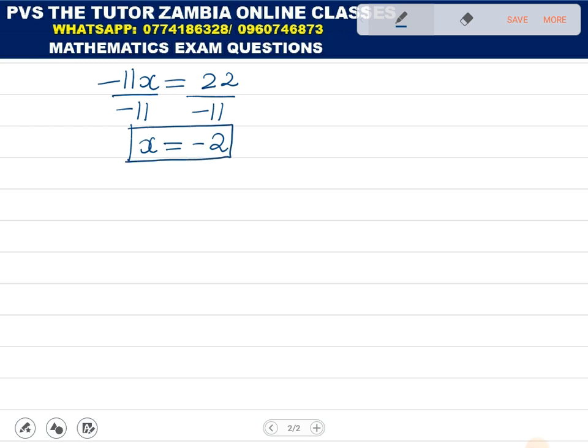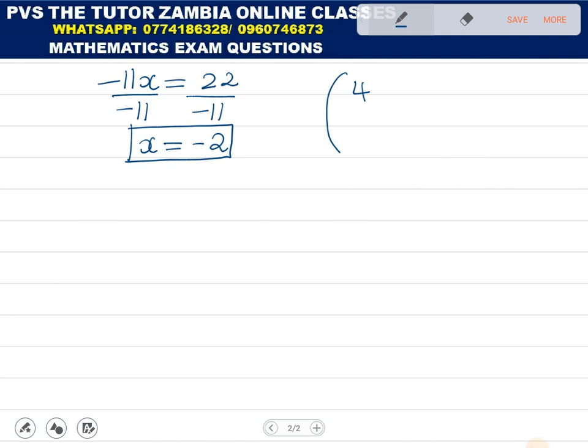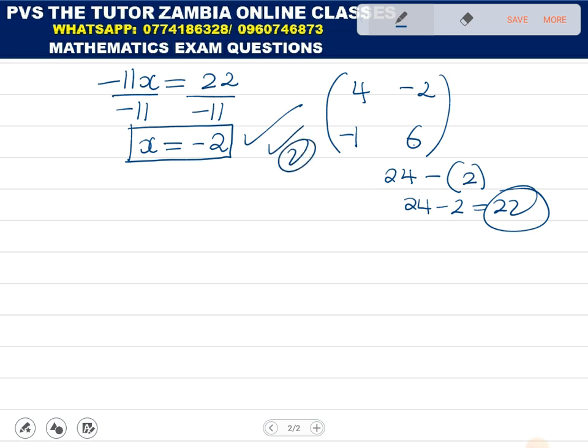How do you know that you are correct? Try to get negative 2 and take it back into the matrix and find the determinant again. If I put negative 2 here, it gives me 6. So what is 4 times 6? You get 24 minus negative 1 times negative 2, you get 2. What is 24 minus 2? You get 22 as your determinant. It means this one is correct. You always prove.